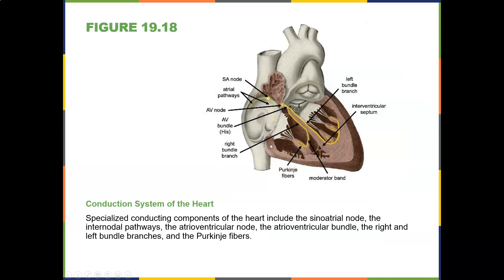Looking at the conduction system, you have the SA node, which is linked to the autonomic nervous system — meaning we don't need to tell the SA node to beat; it is automatic. Based on the autonomic nervous system, your heart rate can increase or decrease depending on the receptors. The SA node sends an electrical impulse to the AV node, and there's a slight delay between them. This delay is important: if the SA and AV nodes fired simultaneously, the atria and ventricles would contract at the same time. Instead, the SA node fires, the atria contract, there's a slight delay, and then you get the sequential conduction — the heartbeat.